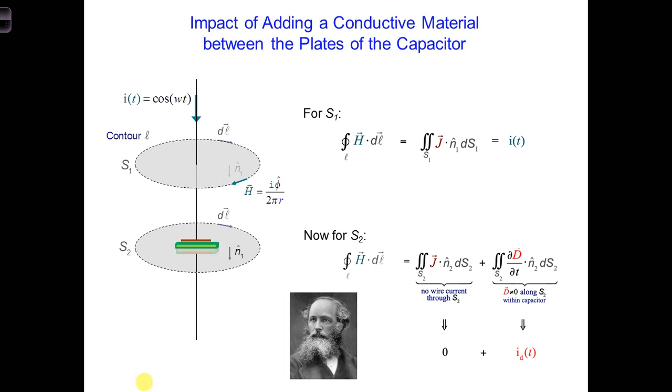Now, what if we replace the free space, which has a conductivity of zero, meaning there are no free electrons available to migrate in free space, and instead add a material with a non-zero conductivity between the two plates of the capacitor? This would mean that there are now some free electrons available to migrate between the two plates of the capacitor. So how do you think this might change our answer on the right side of this equation over here?